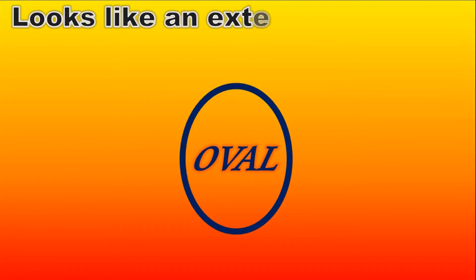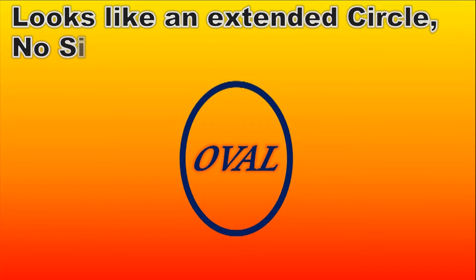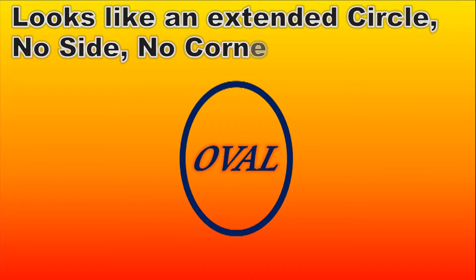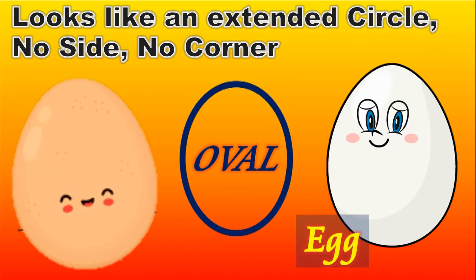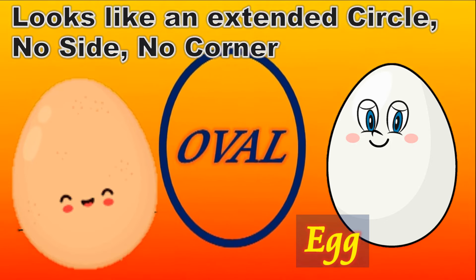Oval. An oval looks like an extended circle. No side, no corner. An egg is oval in shape.